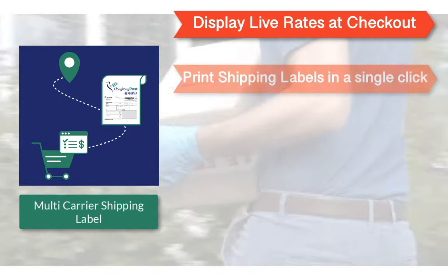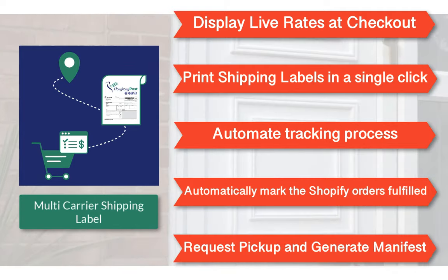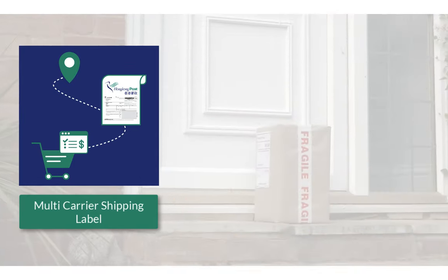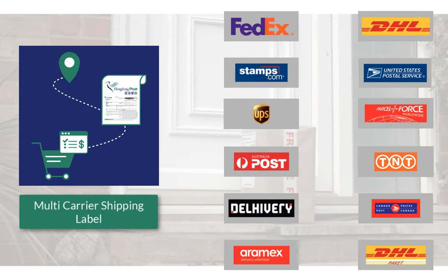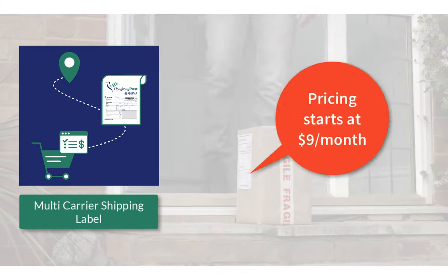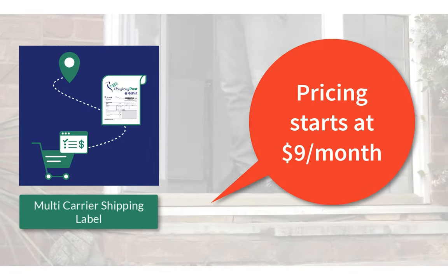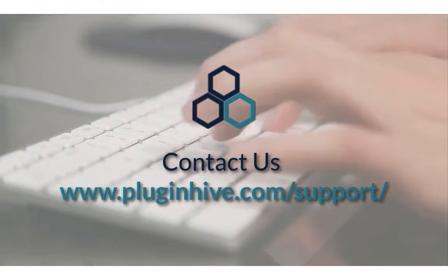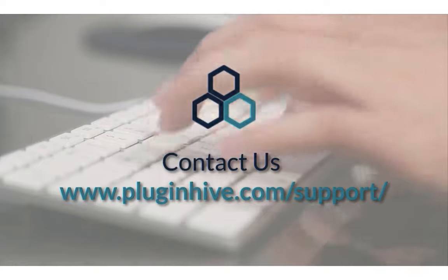With all these features, the multi-carrier shipping label app by PluginHive is the best shipping app for Hong Kong Post. And there's more — the app integrates with many other top shipping carriers as well. The complete shipping solution for your Shopify store starts at $9 per month. If you have any queries or require any assistance setting up the app, please reach out to PluginHive.com/support.